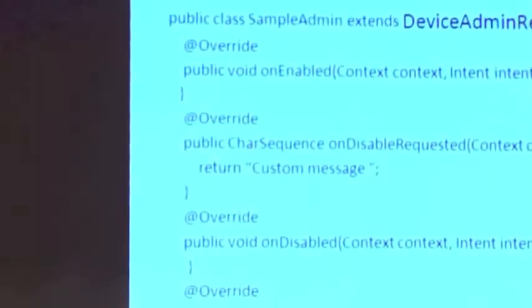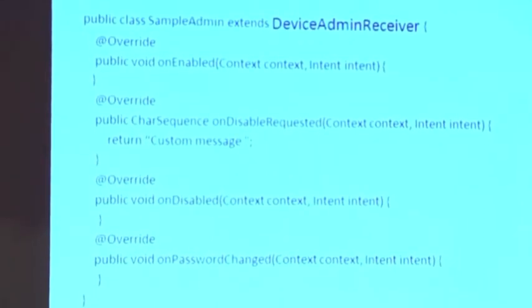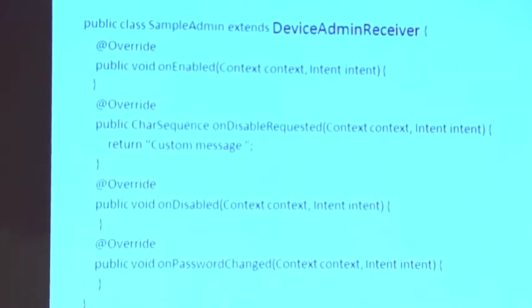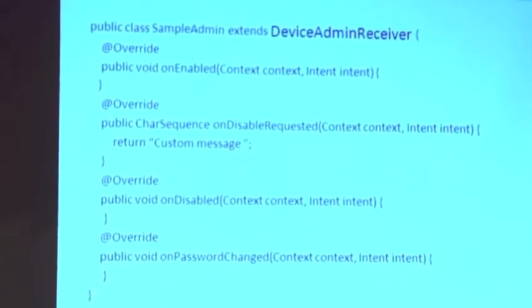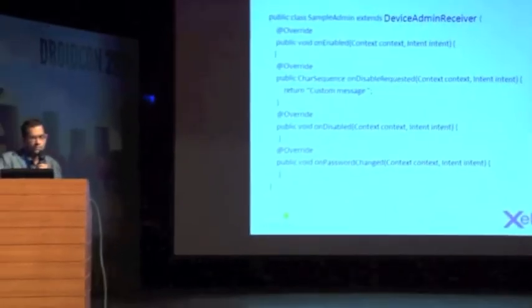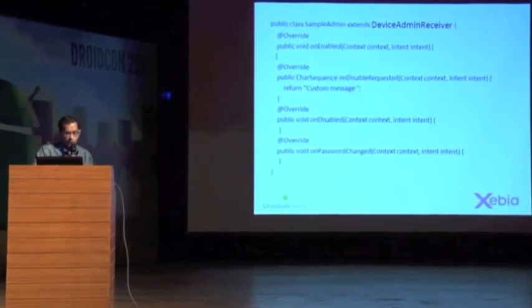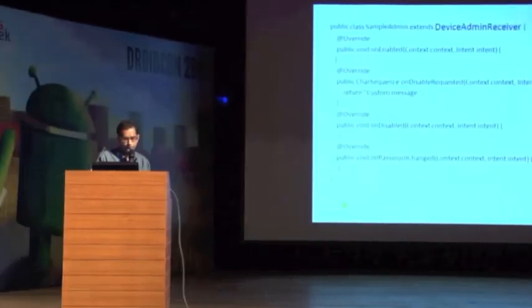The broadcast receiver in Java has four main methods. onEnabled: policies are enabled on the device — you can perform admin actions here. onDisabled: if the employee wants to disable all policies, they must first be registered as admin; once policies are disabled, this method is called. onPasswordChanged: you can define what to do when the password is changed.